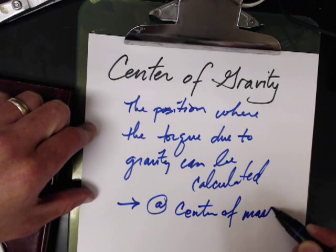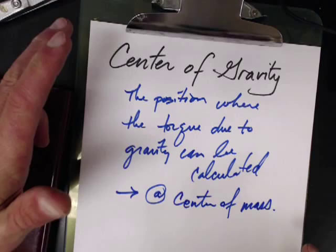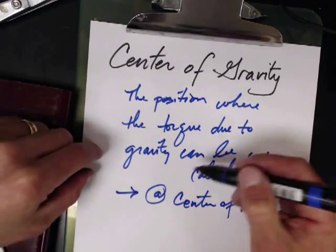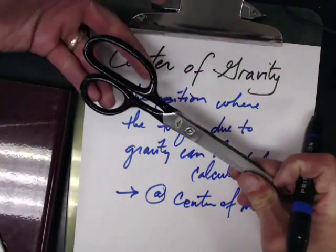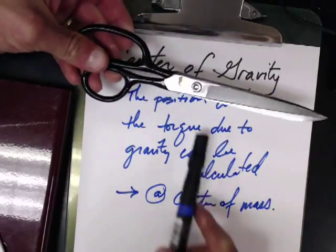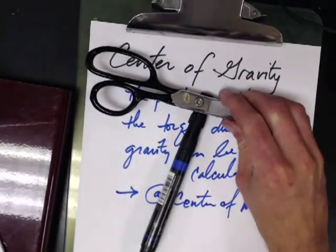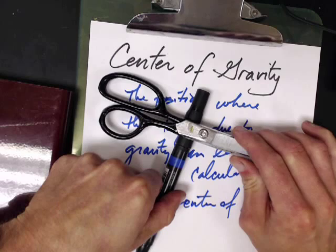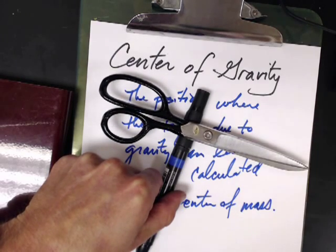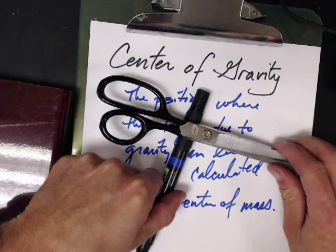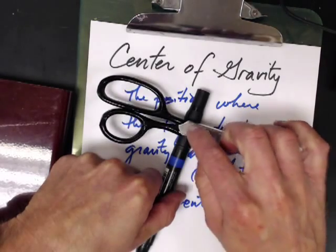Center of mass - where the average position of everything. So like my scissors here, if I tried to balance them, let me see if I can balance them on the marker, it would be right about there. So you can kind of see that's where the center of mass is.